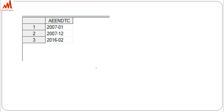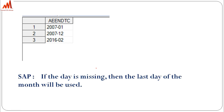If you see the AENDTC — that is adverse event end date — we have a year and month, for example 2007 January, 2007 December, and 2016 February, but we don't have any day for this AENDTC. Our statistician suggested in the SAP that if the day is missing, then the last day of the month will be used. So we need to impute the last date — January last, December last, February last — for this column.